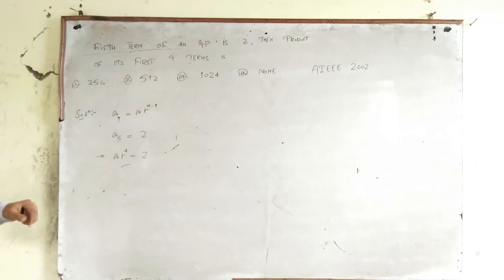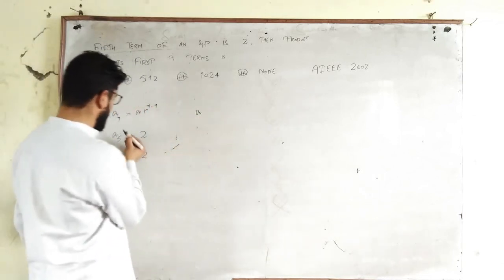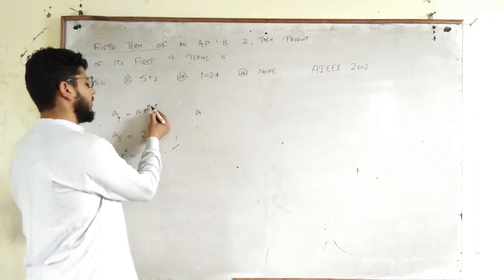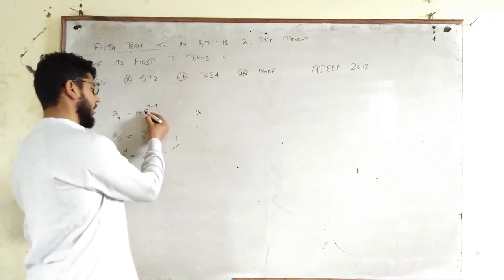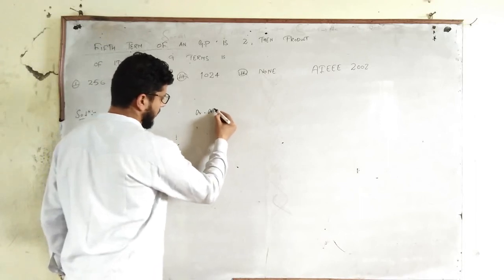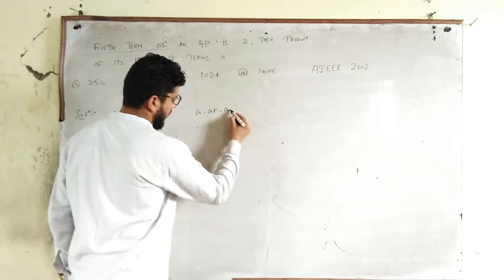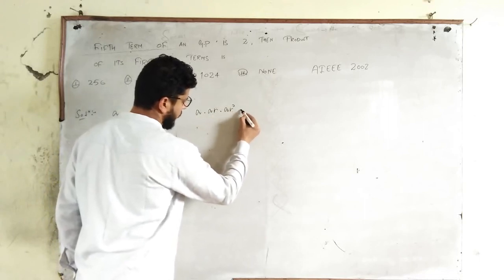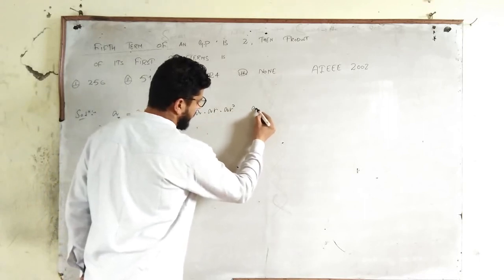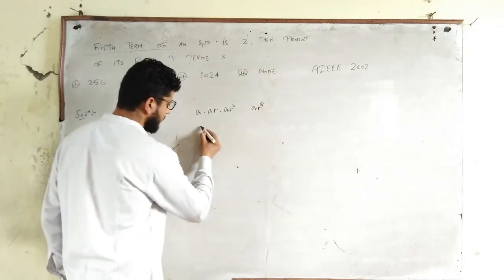Now, we need to find the product. The first term is A. When you plug in 1, you get R^0 = 1, so just A, into A·R, into A·R^2, and so on, up to the ninth term, which is A·R^8.